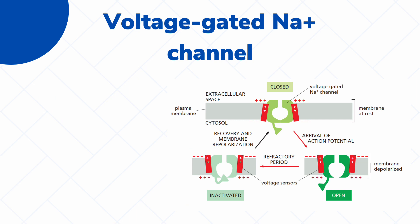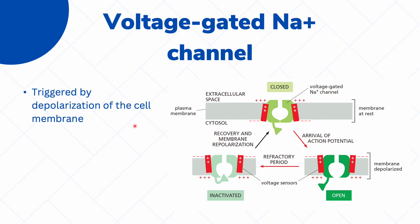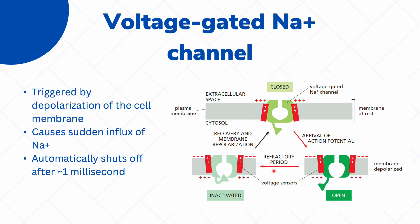The action potential is triggered by a protein which we call the voltage-gated sodium ion channel. In the cell's resting state, this channel is normally closed. But because it is voltage-gated, it can sense changes in the membrane potential of the cell. When depolarization happens, it is triggered and it opens, allowing for the sudden influx of sodium ions into the cell. After a while, this protein undergoes a refractory period in which it automatically shuts off — this occurs approximately one millisecond after it opens — preventing additional sodium ions from entering the cell.